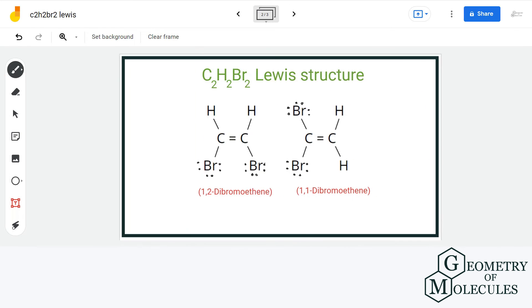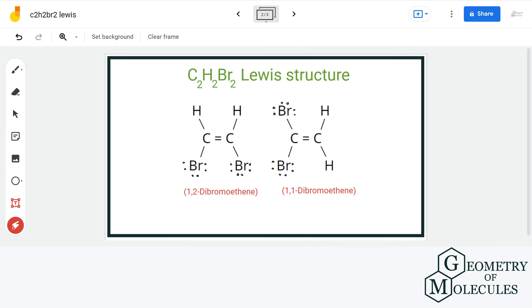There is another way of arranging the atoms around carbon by attaching 2 bromine atoms on one carbon and 2 hydrogen atoms on other and accordingly Lewis structure is drawn. Such compounds having same formula but different structures are called isomers. These are the final 2 Lewis structures having formula C2H2Br2.